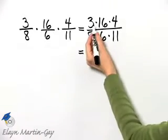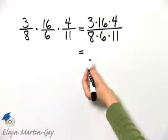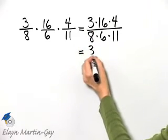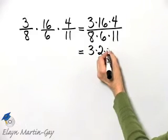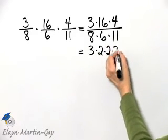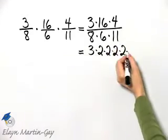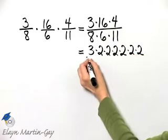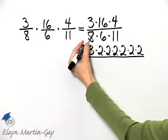Let's write every number as a product of primes to make sure I don't miss any common factors. So that's three times sixteen, which is two times two times two times two, and four is two times two. Do you have to do it this way, all the way down to primes? Absolutely not, but I'm just going to be safe here.